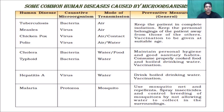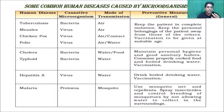Chickenpox, caused by a virus, is transmitted by air or by direct physical contact. Polio, also caused by a virus, is transmitted through air or water. So tuberculosis, measles, chickenpox, and polio all share air as a common mode of transmission. The difference is that tuberculosis is caused by bacteria, whereas measles, chickenpox, and polio are caused by viruses.